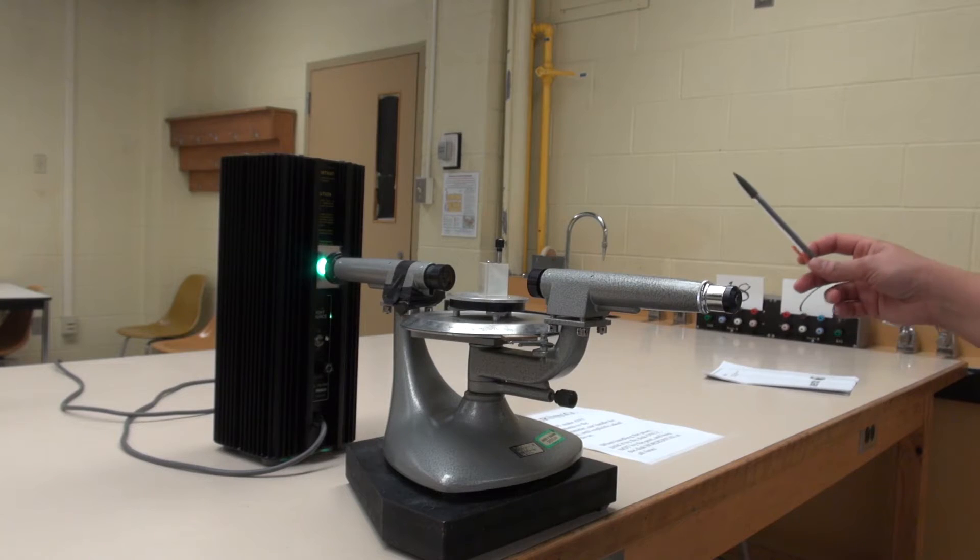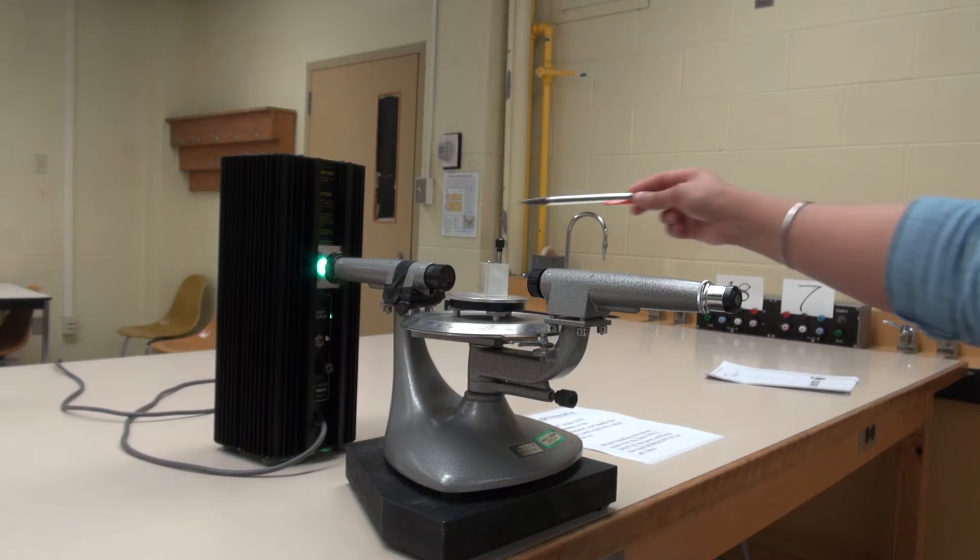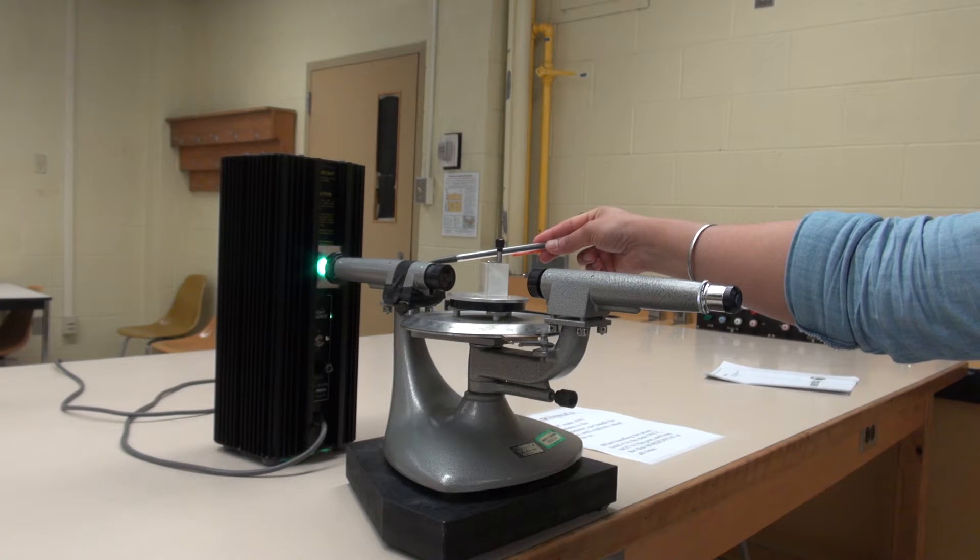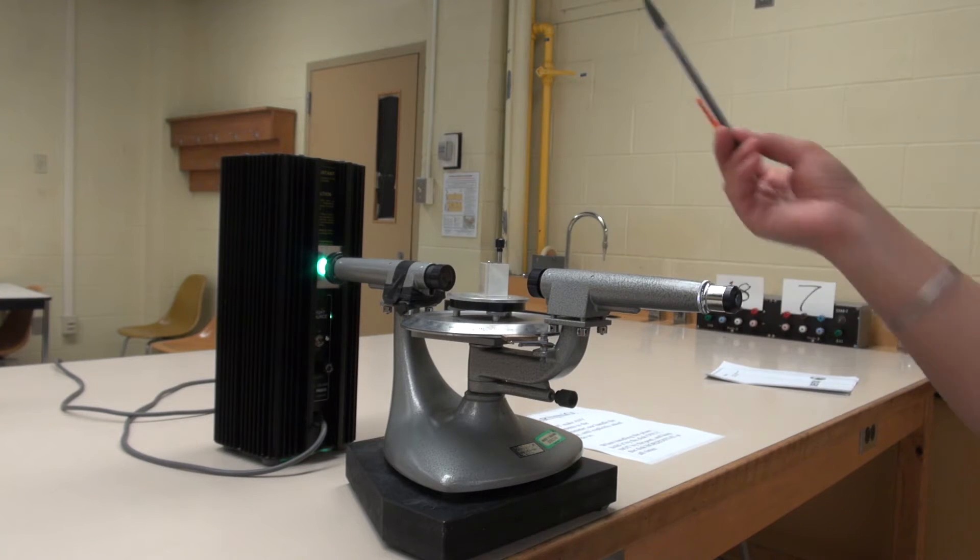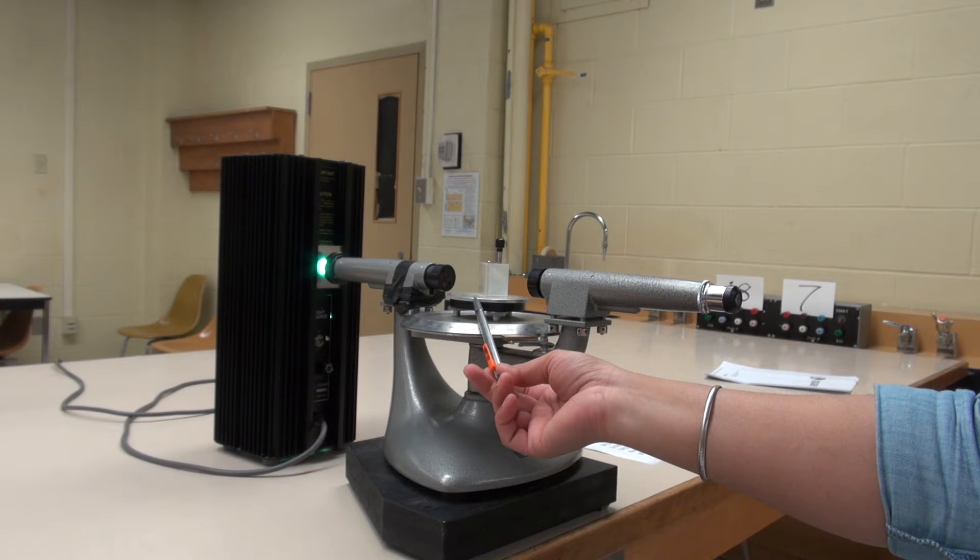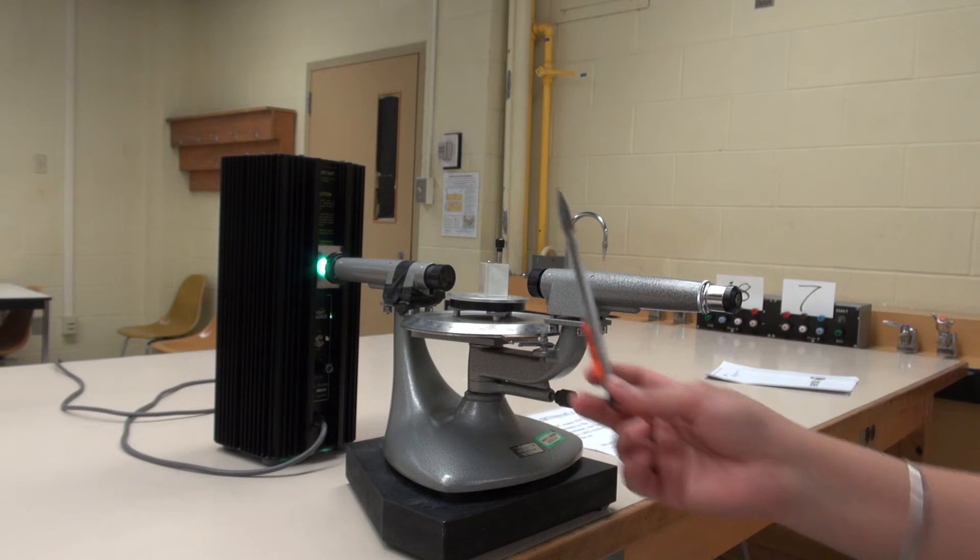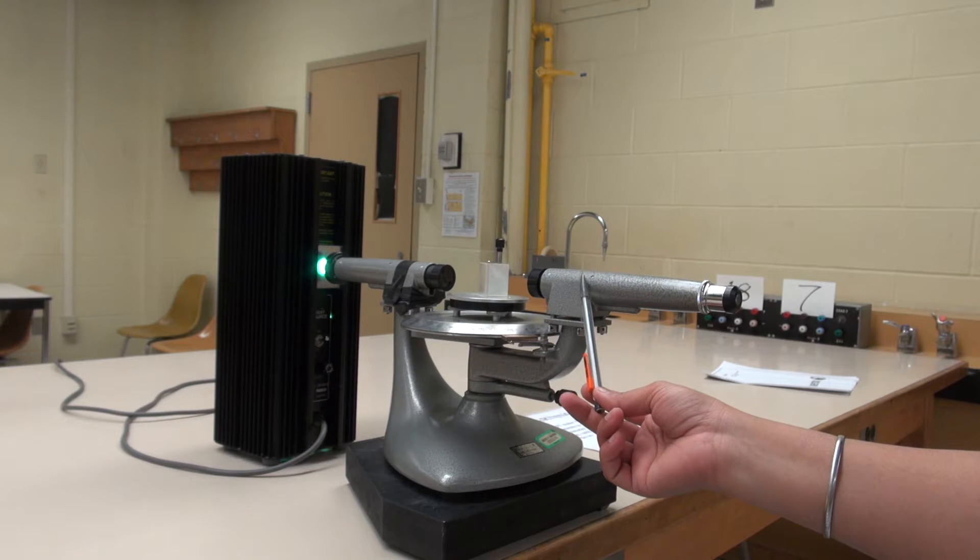The spectrometer has three main parts: a collimator to collect and focus the light coming from a source, a table to mount an optical element, in this lab the optical element is a prism, and a telescope to collect and focus the light after it has passed through the optical element.